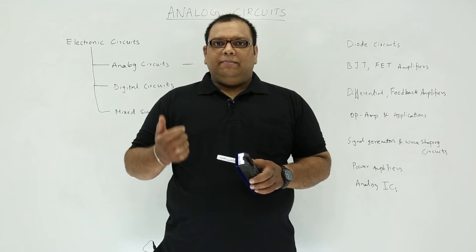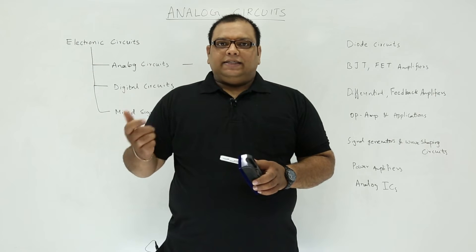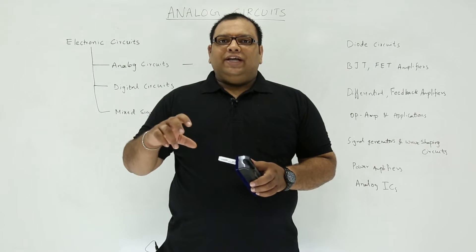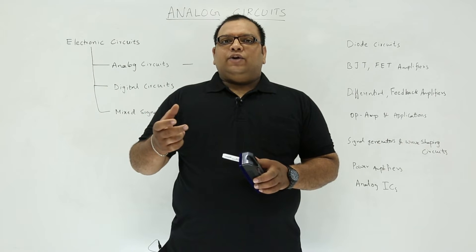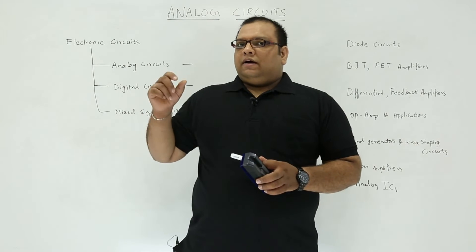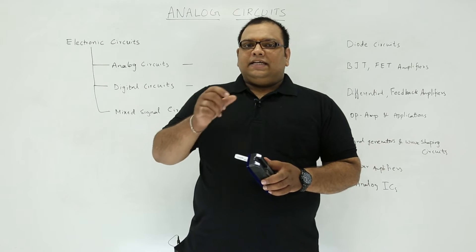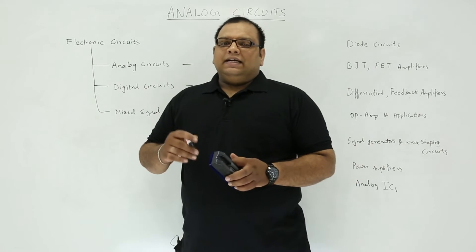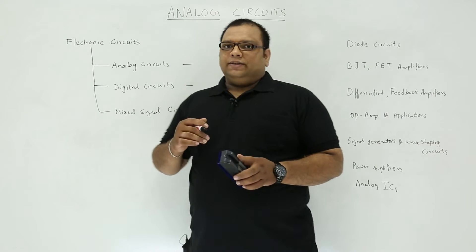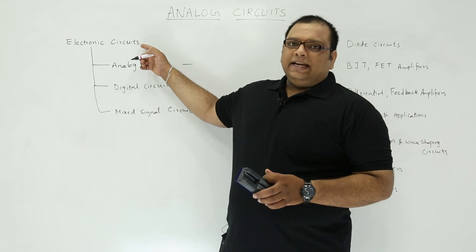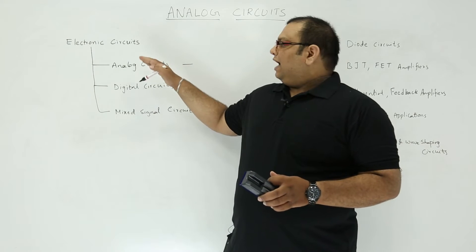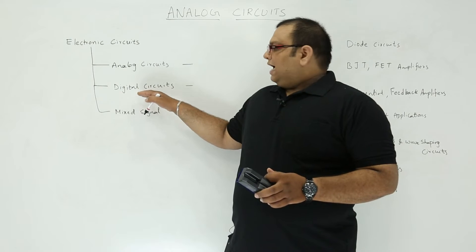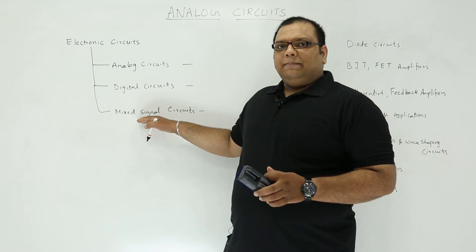From silicon semiconductors we can make devices like diodes, BJTs, FETs, and op-amps. In analog circuits, we deal with circuits related to FETs, BJTs, diodes, and op-amps. The types of circuits in electronics are: analog circuits, digital circuits, and mixed signal circuits — these are the three major divisions.